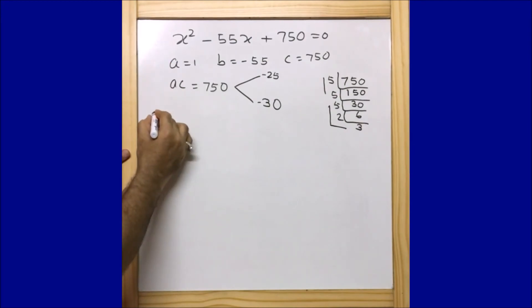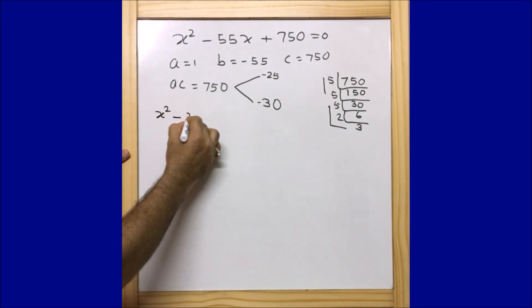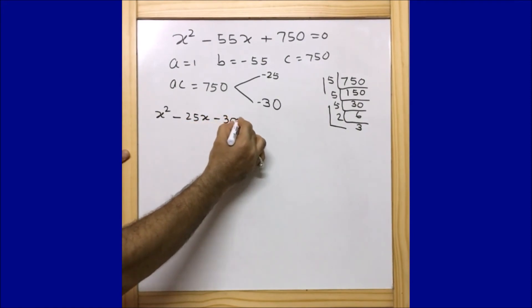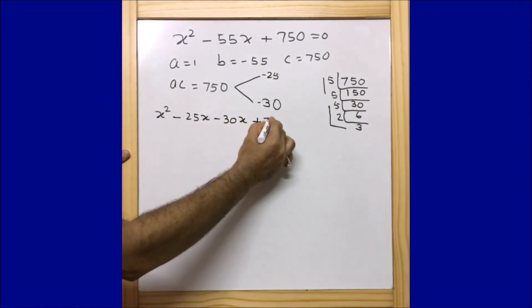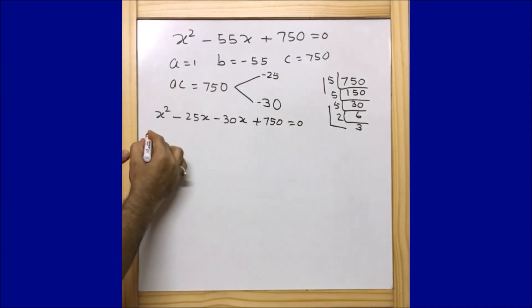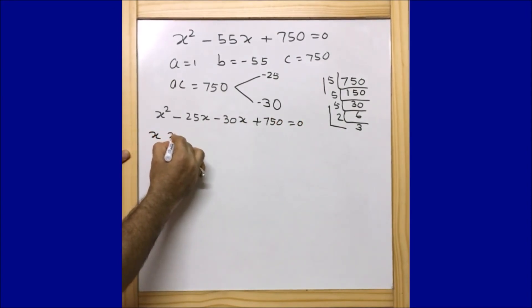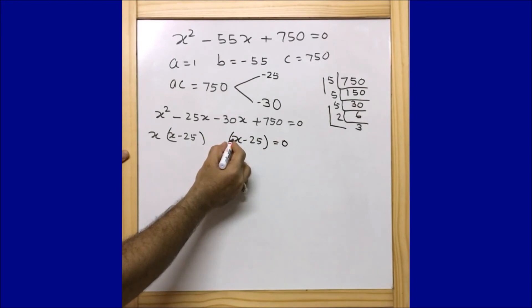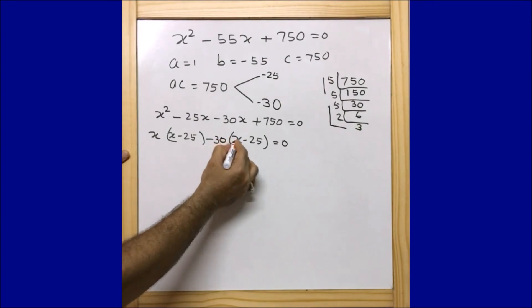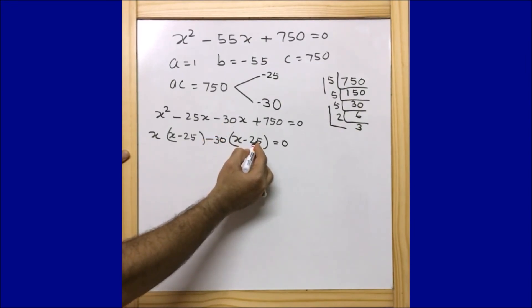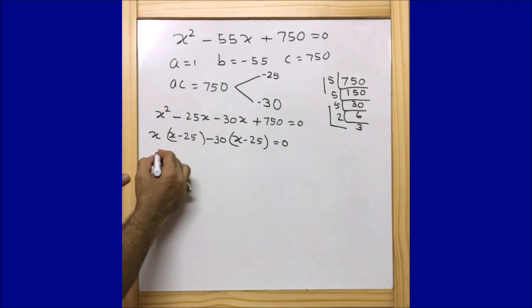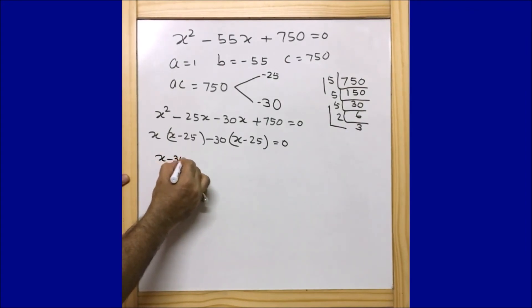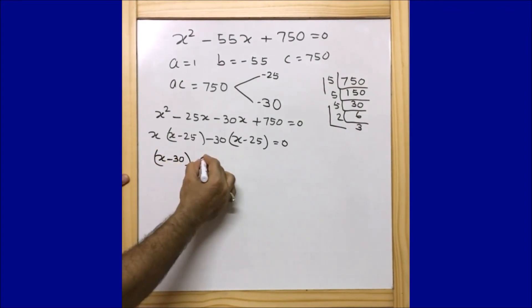I can rewrite the equation as: x squared minus 25x minus 30x plus 750 equals 0. Taking x as common from the first two terms gives x(x minus 25). From the last two terms, taking minus 30 as common: minus 30 times x is minus 30x, and minus 30 times minus 25 is plus 750. So we get (x minus 25) as the common factor.